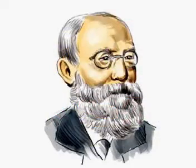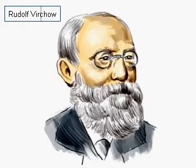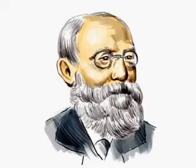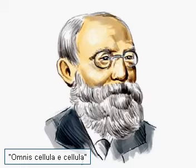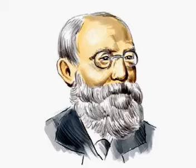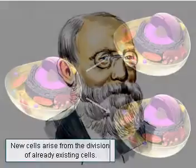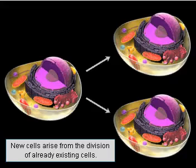The third principle of the cell theory was added in 1855 by another German researcher, Rudolf Virchow, who lived from 1821 to 1902. In his famous aphorism, "Omnis Cellula e Cellula," which means "all cells come from cells," Virchow expressed the discovery of the fact that new cells arise from the division of already existing cells.